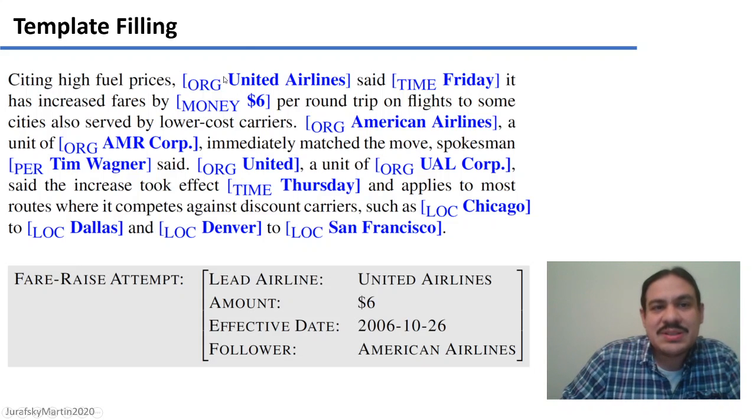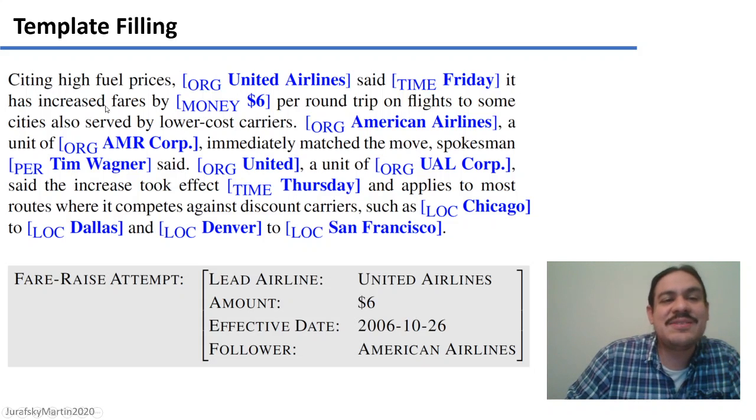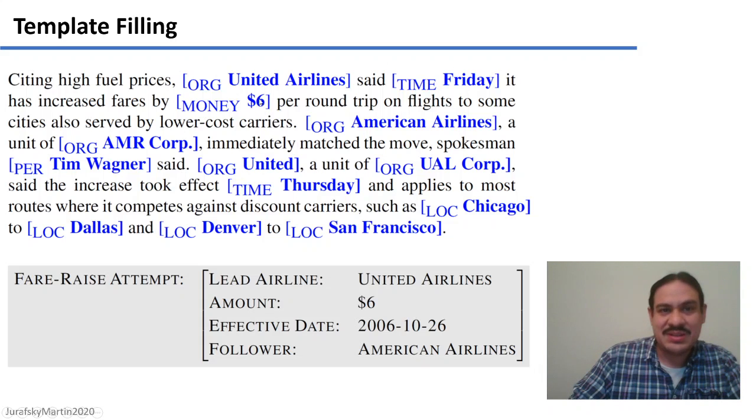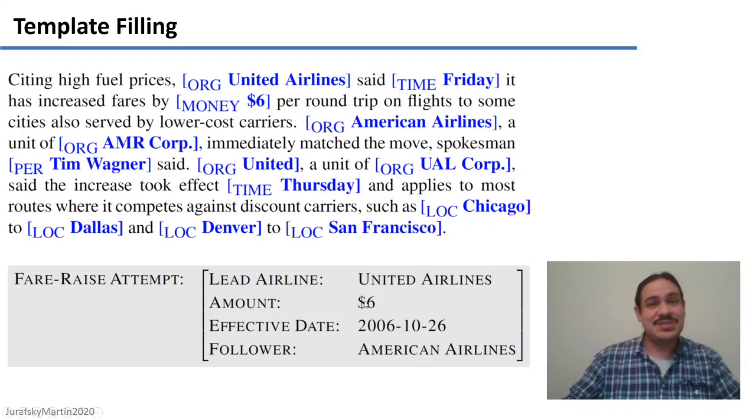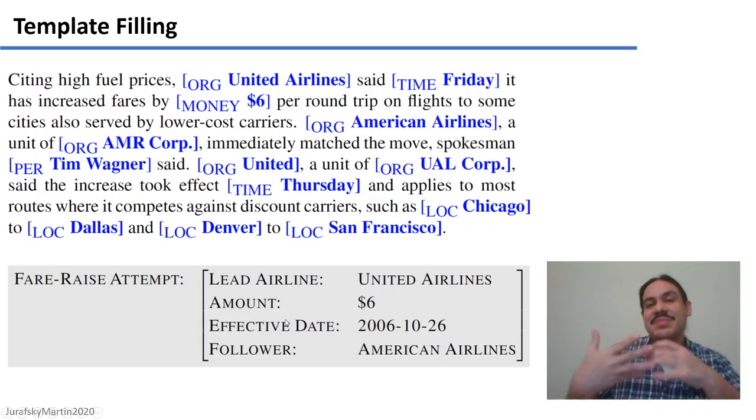The first thing you would need to do is do named entity recognition to find the different components that you might be looking for. For example, money. You also need regular expressions, so that there's something that matches, it has increased fares by six dollars, which would be an increase or a raise. By having a regular expression that identifies this part, and by extracting this as a named entity, you would then put that information into the format of your database or knowledge base, and you would have extracted information from raw text.